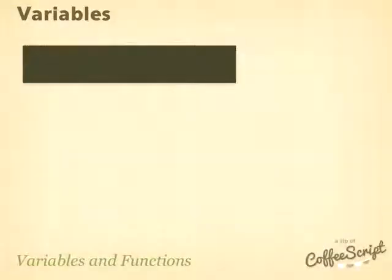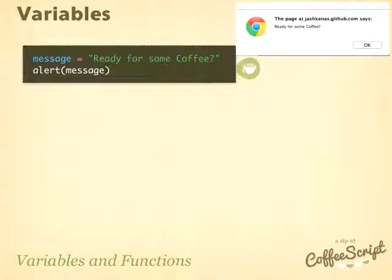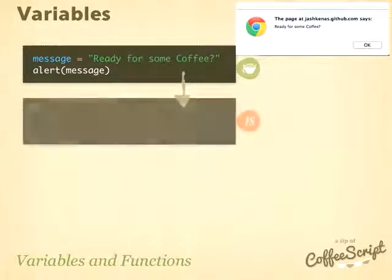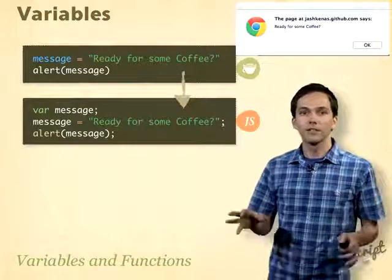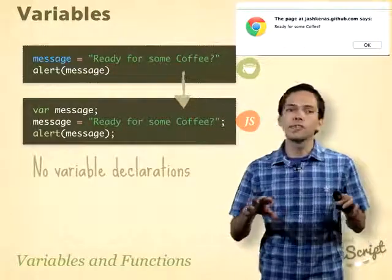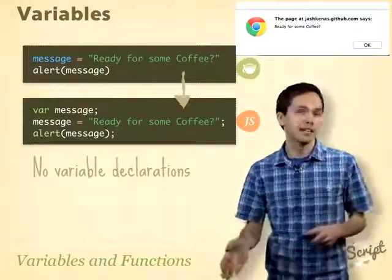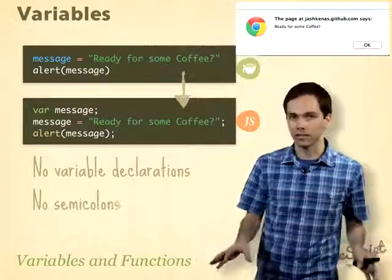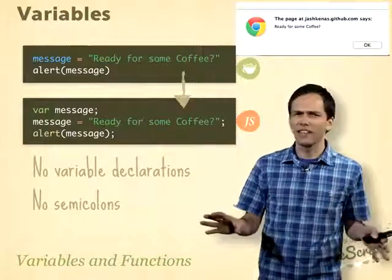Let's take a look at our first CoffeeScript. Here you can see some code — if we ran it, it would make an alert pop up. The JavaScript that this CoffeeScript generates looks something like this. Two things to notice: first, in CoffeeScript we don't have to do any variable declaration — it all gets handled for us. Second, there are no semicolons in this code. We don't have to deal with those anymore.